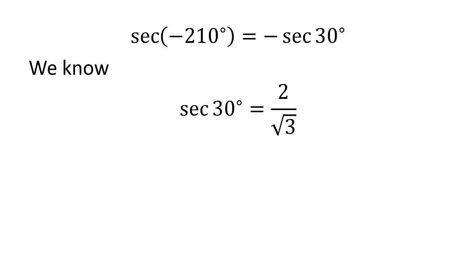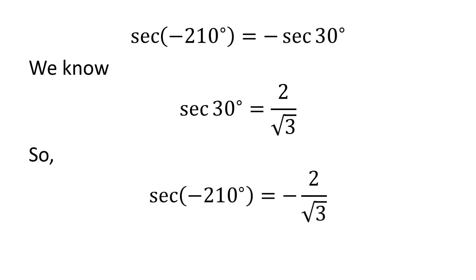We know the value of secant of 30 degrees is equal to 2 upon square root of 3. So we get the value of secant of minus 210 degrees is equal to minus 2 upon square root of 3.